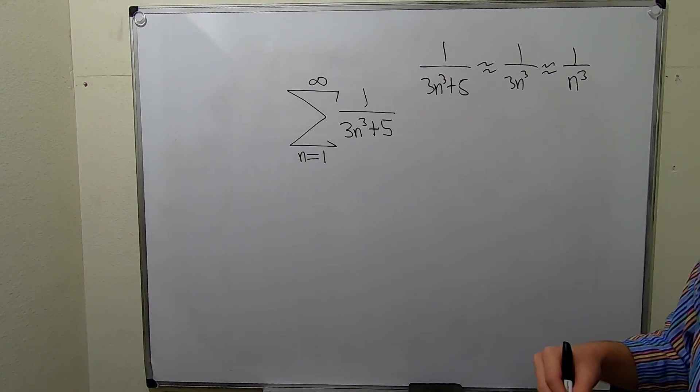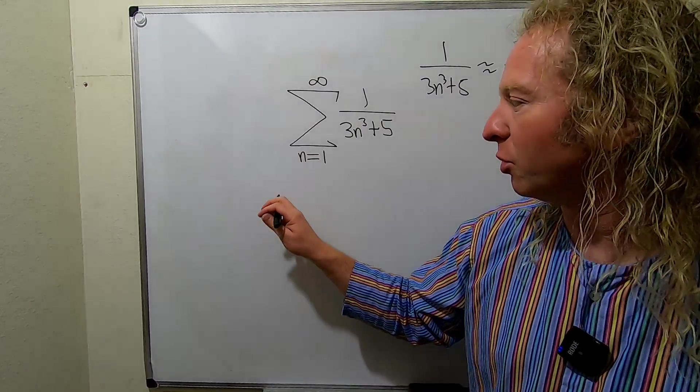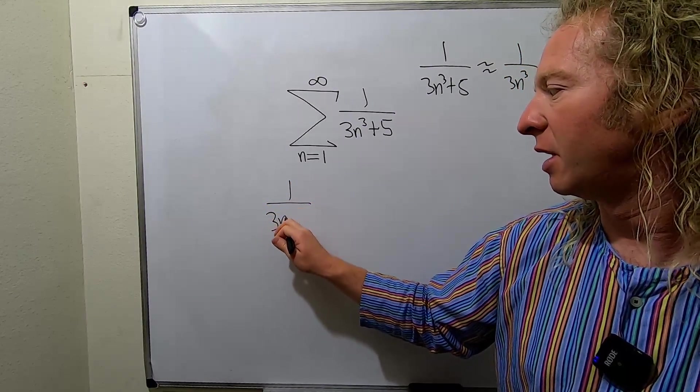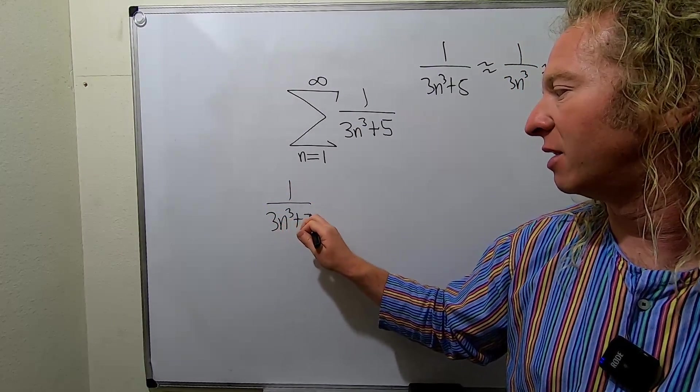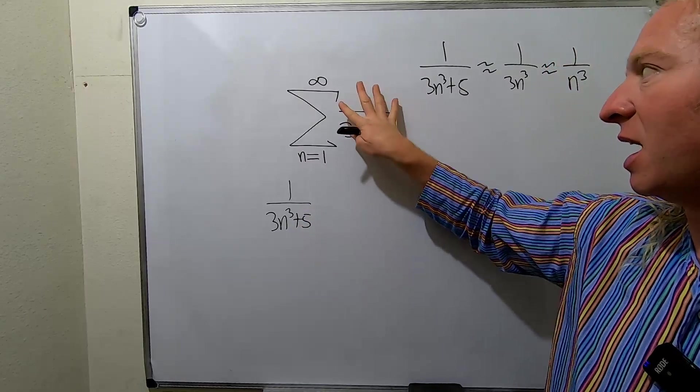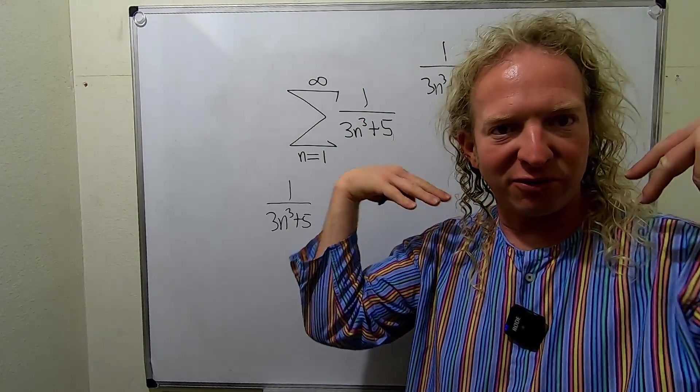That means we have to show convergence. What we'll do is write down this piece here and show that this is less than the a sub n of a convergent series.